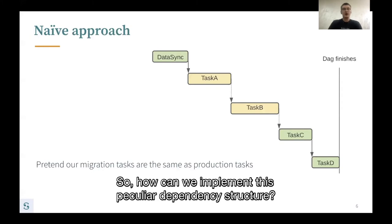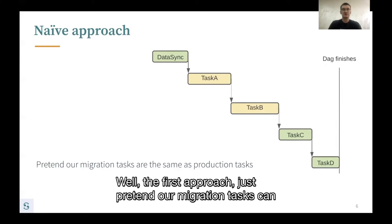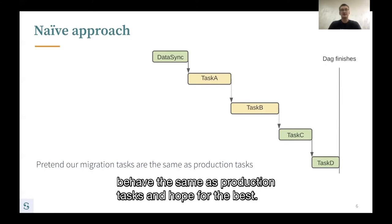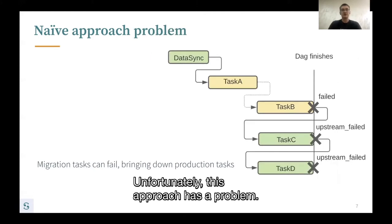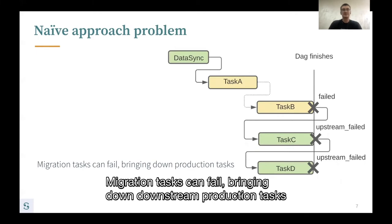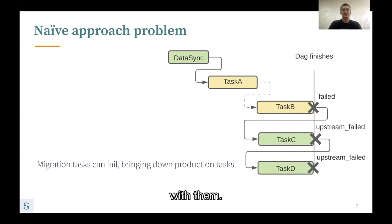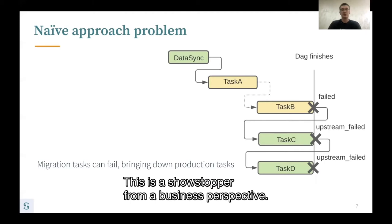So how can we implement this peculiar dependency structure? First approach: just pretend our migration tasks can behave the same as production tasks and hope for the best. Unfortunately, this approach has a problem — migration tasks can fail, bringing down downstream production tasks with them. This is a showstopper from a business perspective.